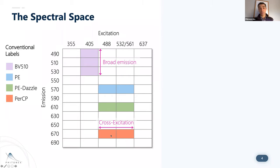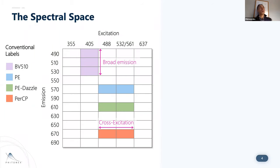The two behaviors we're familiar with: first, dyes are cross-excited by multiple lasers — something like PE conjugates cross-excited by both the blue and the yellow-green lines. Second, something like BB510, a traditional dye, is narrowly excited but has broad emission. In both cases, either of these could lead to a large amount of spillover spreading, a loss of resolution of the underlying biology, and our intent is to go back and remove or replace fluorophores with these characteristics.